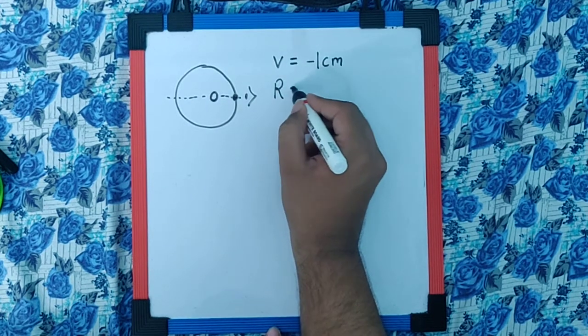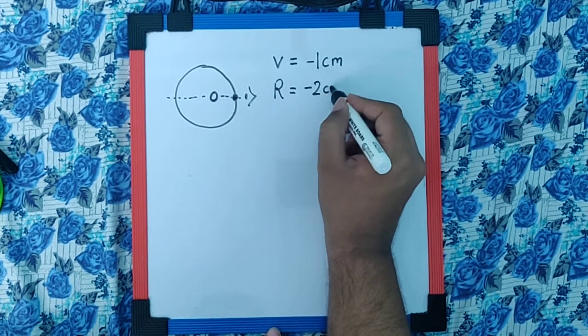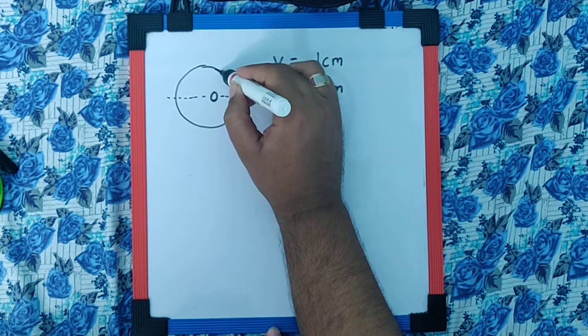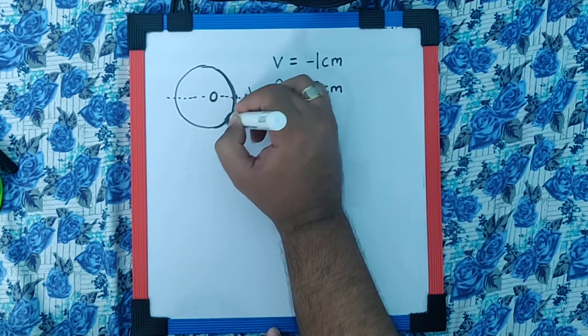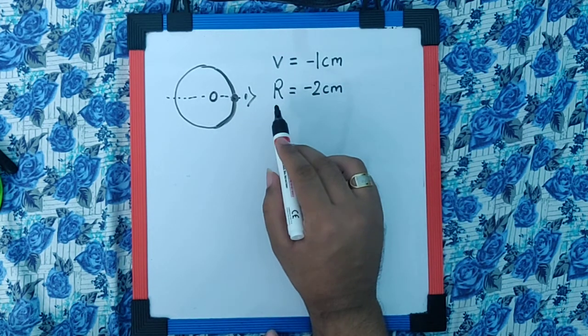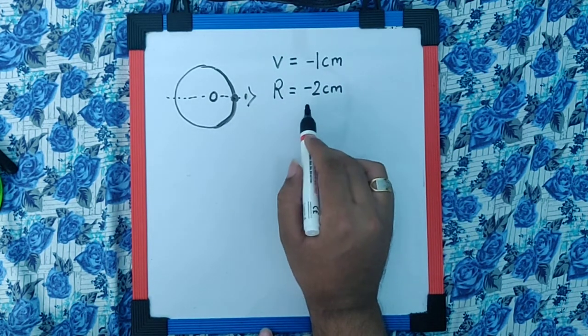And the radius of curvature is going to be minus 2 cm because this is the curvature on which the refraction is taking place. And the diameter is given as 4 cm. So radius is half of that.